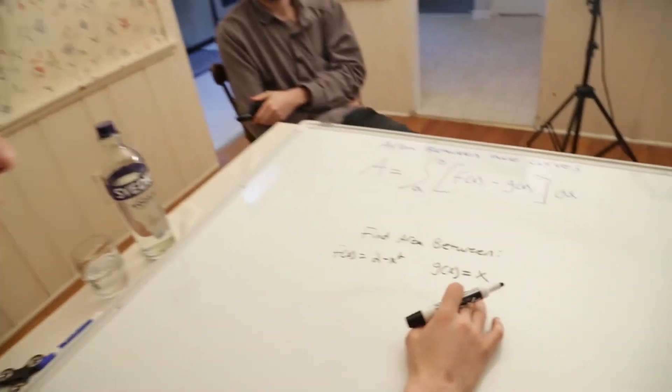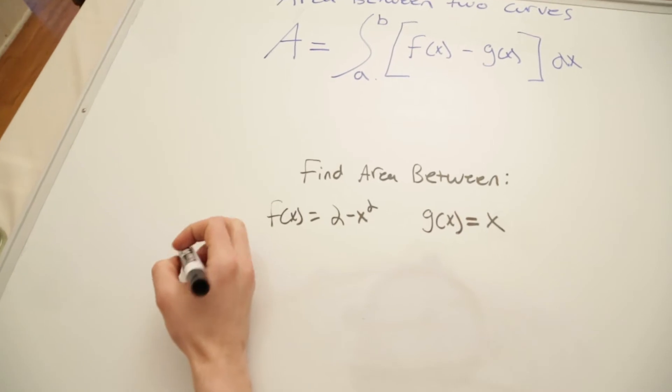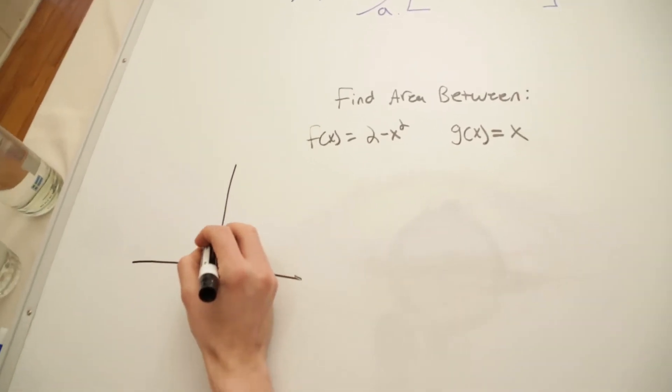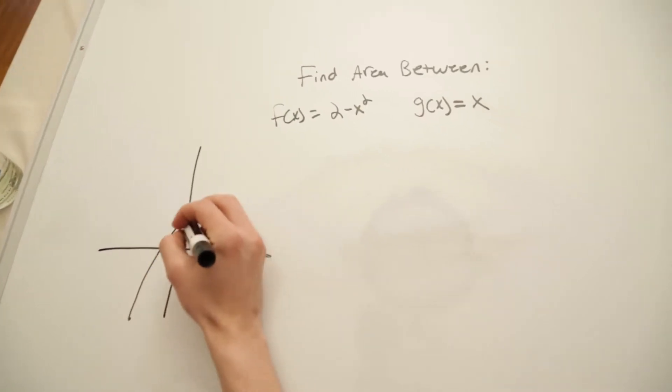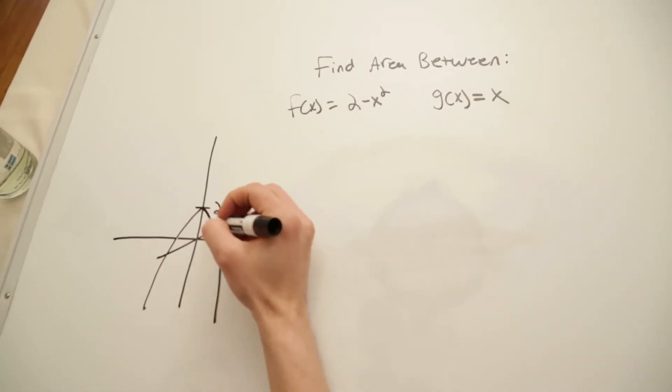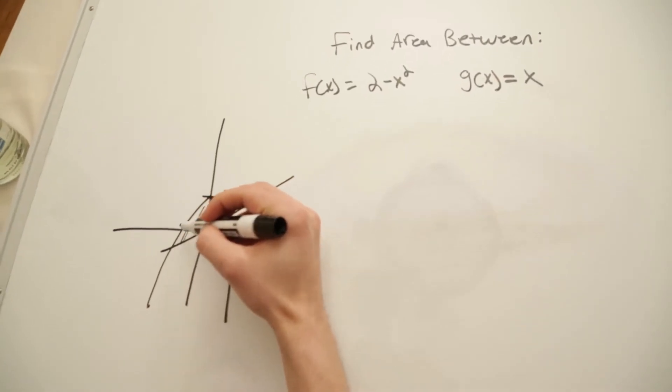Let's do a harder one. All right, so now we're going to find the area between two minus x squared and x. If we draw this out, we're going to start up two. And then we have negative x squared. And then we have x. So this is going to be what we're trying to find.